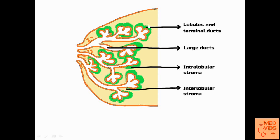This one right here is called the terminal duct lobular unit. The main structures present here, which are in the shape of grapes, are called acini or alveoli. These are what are going to secrete milk in pregnant women. Each acinus will have a small duct which opens into the main large duct. These small ducts are called terminal ducts.